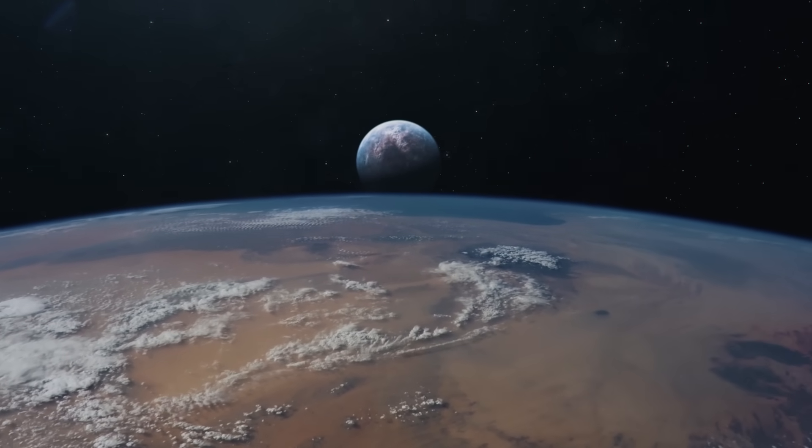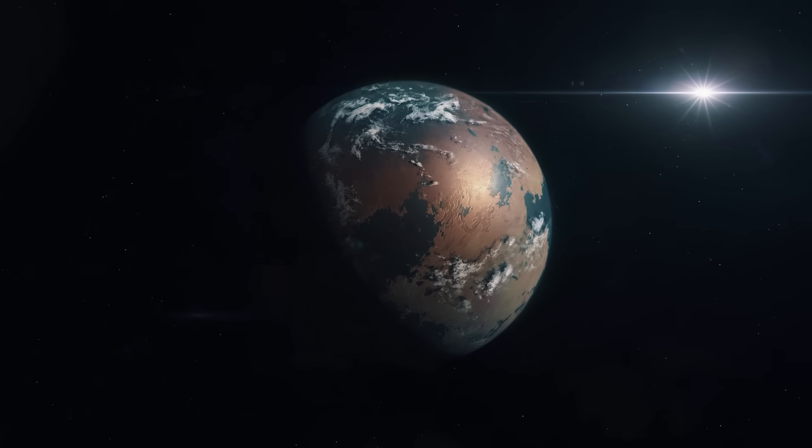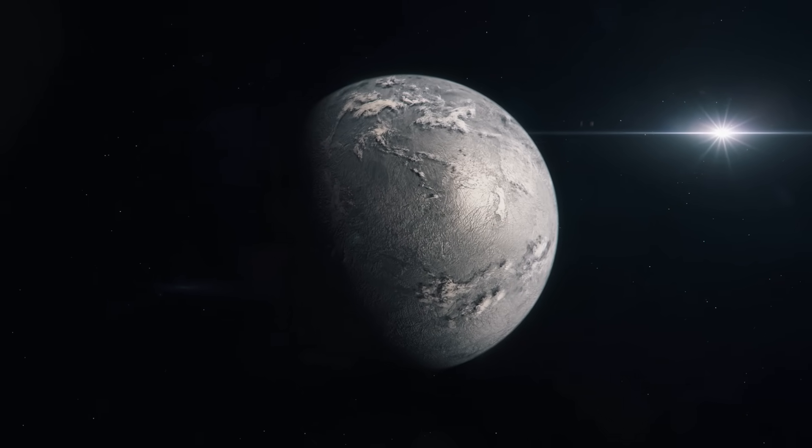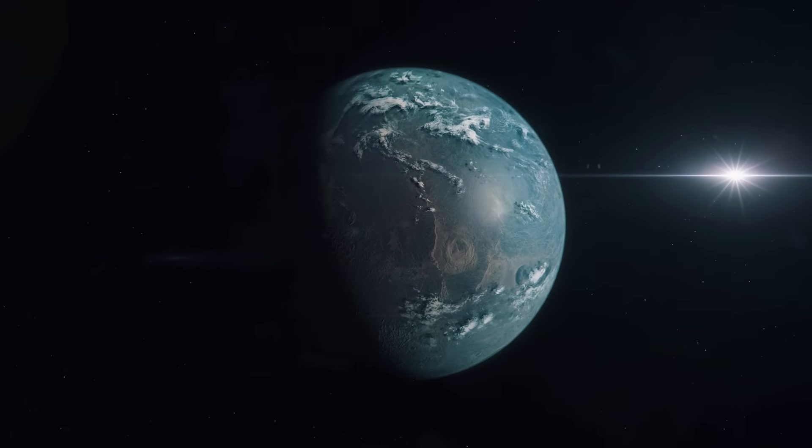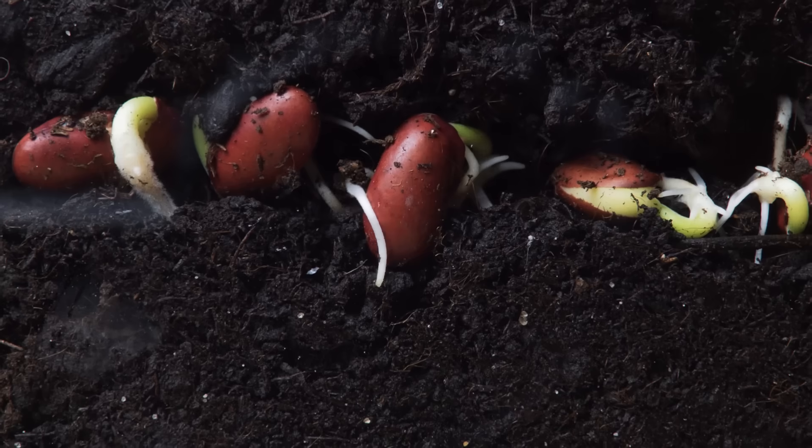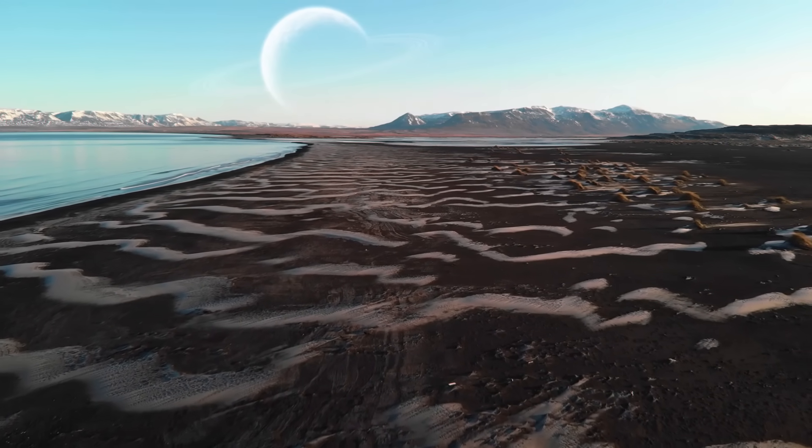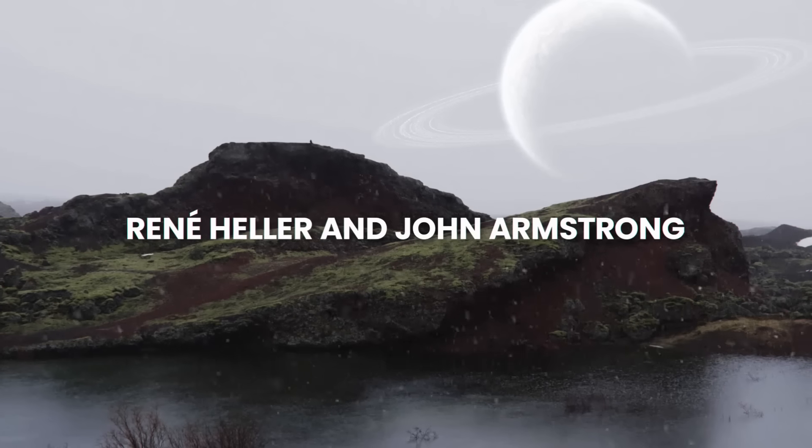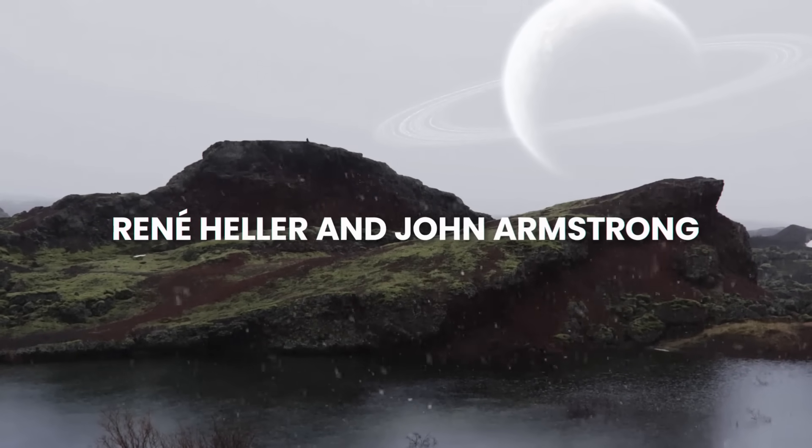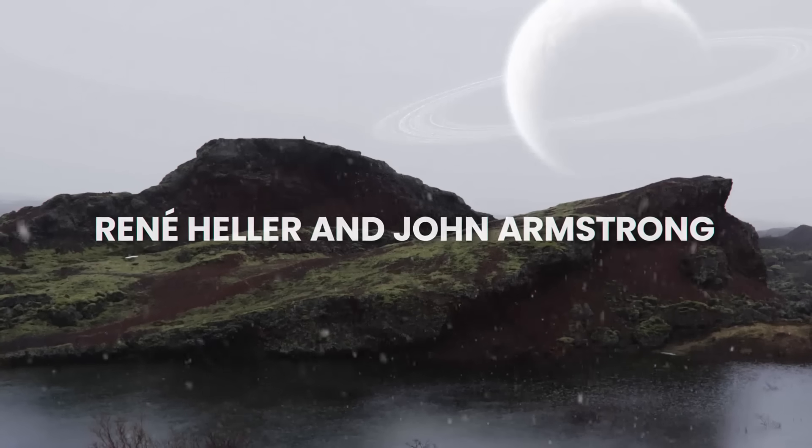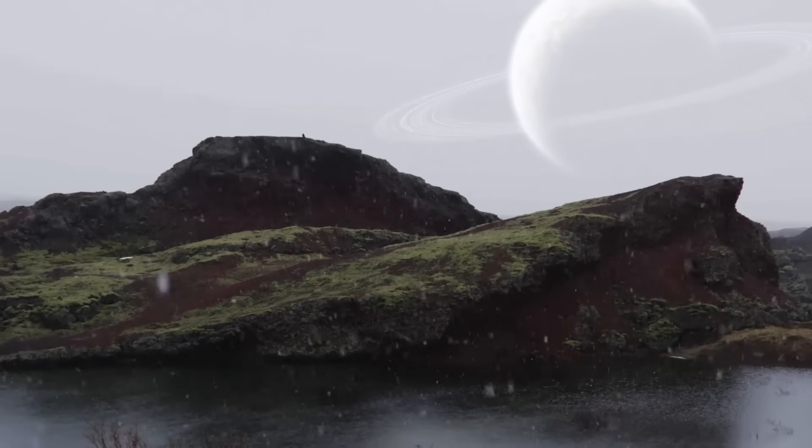But Proxima b is not the only candidate as a habitable planet. Scientists now say they've discovered 24 super-habitable planets, or exomoons, that could be better suited for the emergence and evolution of life. The concept super-habitable came from two researchers in 2014. René Heller and John Armstrong have stated it takes much more for an exoplanet to be habitable than just being in the habitable zone.